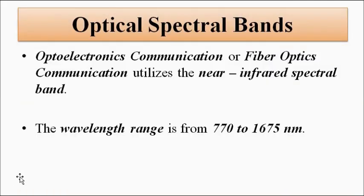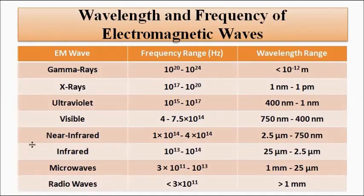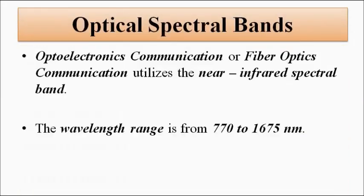This brings us to the topic of optical spectral bands. In optoelectronics communication, or fiber optics communication as it is called, the optical communication system utilizes wavelengths and frequencies around the near infrared band — not exactly that entire range, but some portion of it. This near infrared band is very important from the point of view of optical communication systems, and the reasons why will be discussed in a separate video.